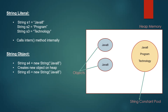The main difference is: for a string object, whenever you create a new object, that object gets created in the heap memory, even though that content is already present within the heap memory. Whereas for a string literal, if the string already exists in the string constant pool, then that is returned as the reference to the literal.